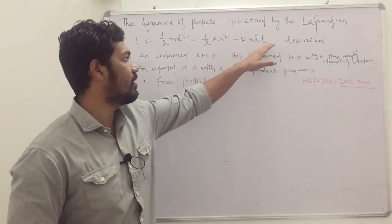So, let's read the problem. The problem says the dynamics of a particle governed by the Lagrangian L equals to half mx dot square minus half kx square minus kxx dot t describes an undamped simple harmonic oscillator, a damped harmonic oscillator with a time varying damping factor, an undamped harmonic oscillator with a time dependent frequency and option d is a free particle.